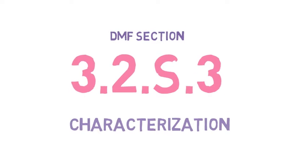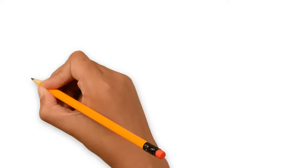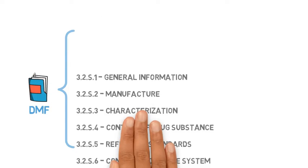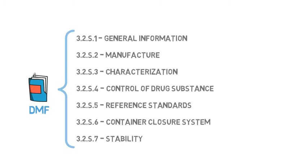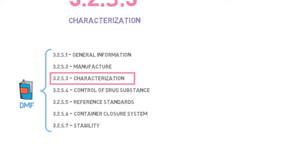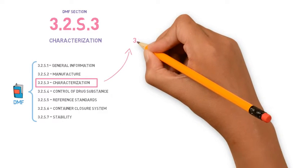DMF Section 3.2.S.3 Characterization. The DMF in CTD format consists of seven sections. In this video, we will talk about Section 3.2.S.3, which is divided in two parts.